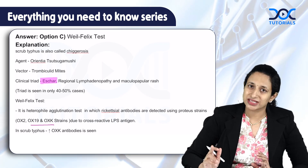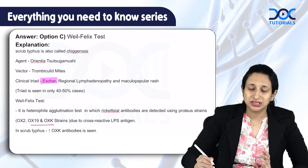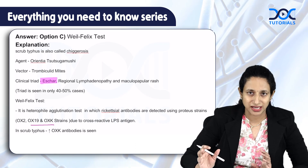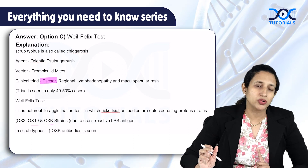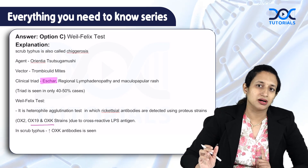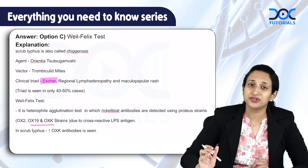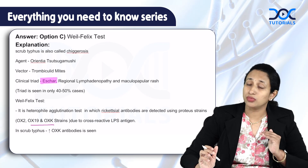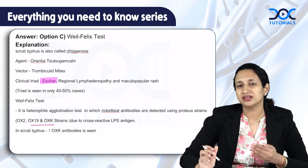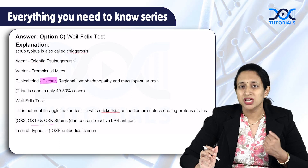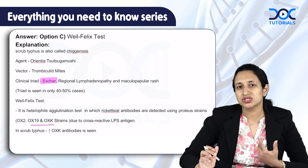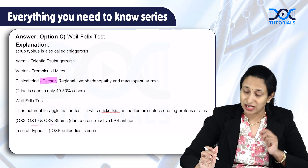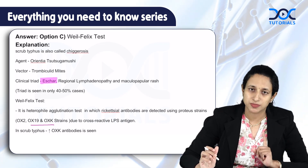The specific antigens used are OX2, OX19, and OXK. This test is based on cross-reactivity of the lipopolysaccharide antigen. In scrub typhus, OXK antibodies are seen — that is very important to know, as it differentiates scrub typhus from endemic typhus, epidemic typhus, and certain other conditions like spotted fever. This test is used more like a screening test and is not a confirmatory test. Always keep in mind this is a non-specific test.